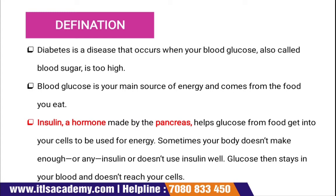Diabetes is a chronic disease that occurs either when the pancreas does not produce enough insulin, or when the body has insulin present but cannot effectively use it. In these two cases, you can have diabetes.